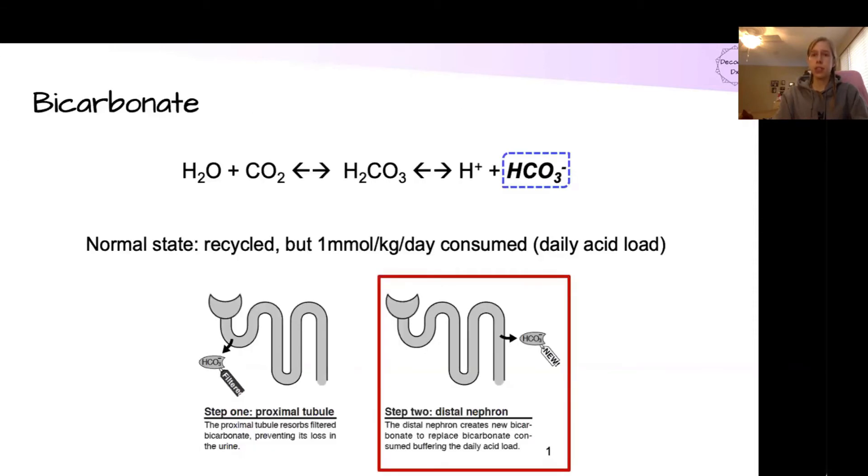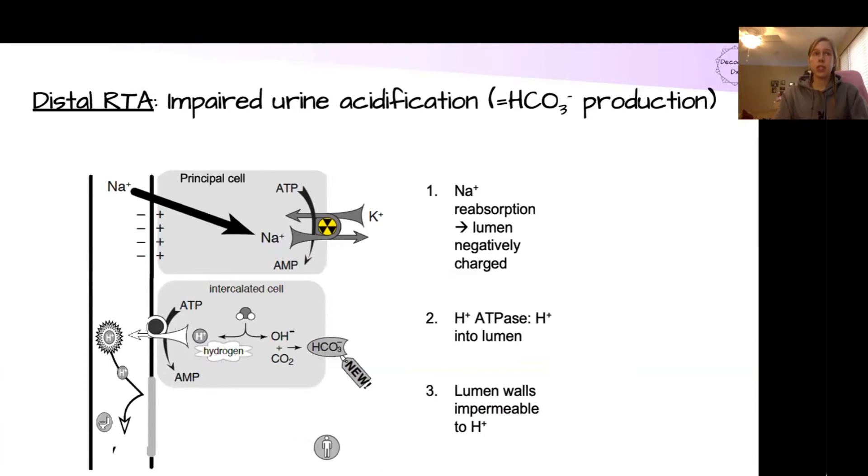So what about if the distal nephron isn't working? If that part of the creation of new bicarb is not working? This leads to a distal RTA. The general issue of a distal RTA is impaired urine acidification, which equals bicarbonate production. So I know this is a busy slide, so we'll take it one piece at a time. This is in a normal functioning nephron.